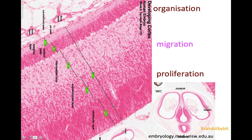Proliferation of glial cells and neurons in the ventricular layer; proliferation of the neurons along radial glial cells towards the convexity; and organization of the neurons in the cortical plates, establishing six cortical layers.